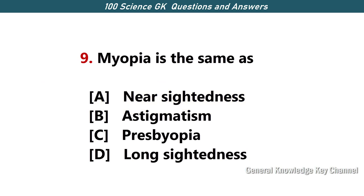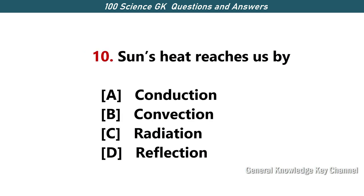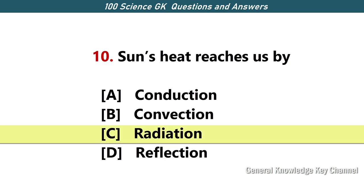Myopia is the same as — Answer A — nearsightedness. Sun's heat reaches us by — Answer C — radiation.